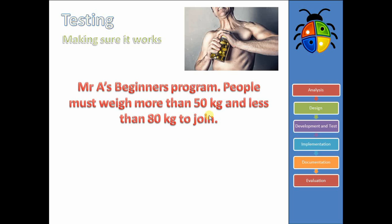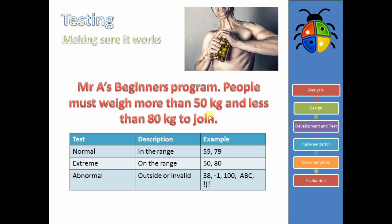Okay, good. Hopefully you have something. So for normal, we're going to go with something in the range — it could be something like 50 or 79, anything between 50 and 80 really. Our second option, extreme — which is on the range — that would have to be 50 or 80. Now notice, technically there's a crossover, that 50 and 80 are normal test data. But because they're on the ranges, please don't put them in your answer for normal. Please make sure it's something inside, not on the edges — for on the edges, we use the extremes.